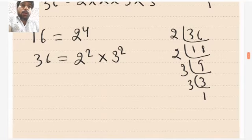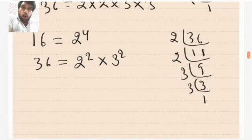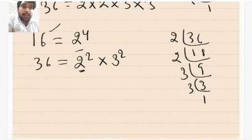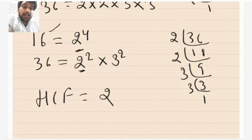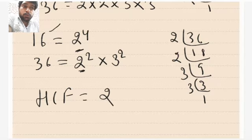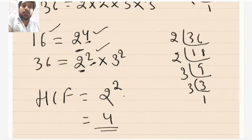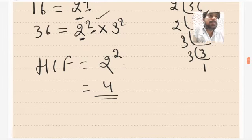Is it clear? Now to find out HCF, what you have to do is take the common prime factor with the least power. The common prime factor here is 2, because it occurs in the prime factorization of both 16 and 36. HCF is the product of all common prime factors taken with their smallest power. The power of 2 in 16 is 4, and in 36 it is 2, so we take the least power — 2 squared — which equals 4. So the HCF is 4.